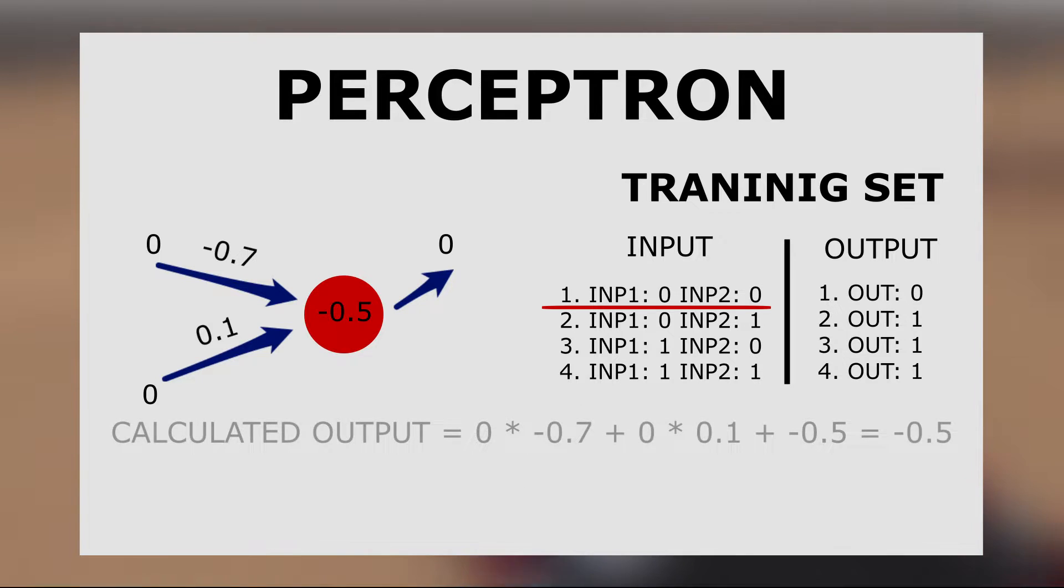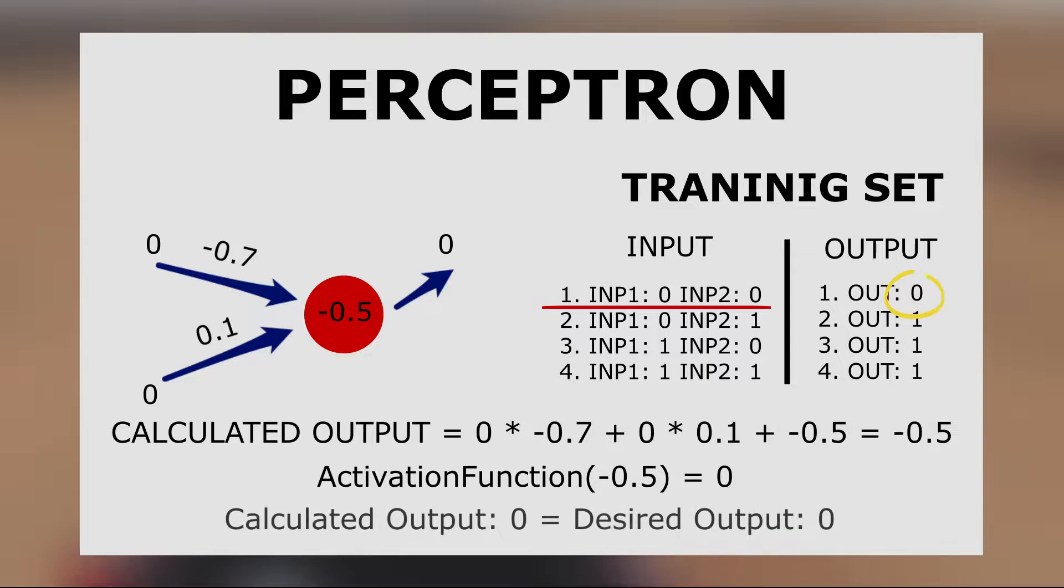This returned value 0 or 1 is compared to the desired output passed in the Perceptron in the training set. If the output of the activation function is equal to the desired output of the training set, we don't change anything and check the next training set.